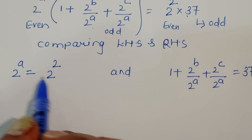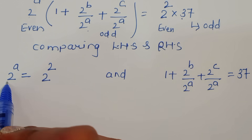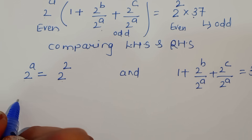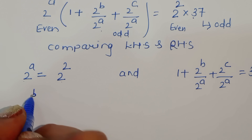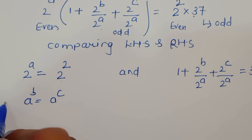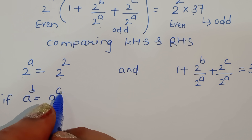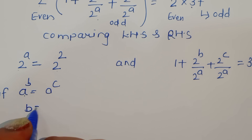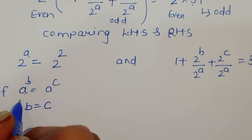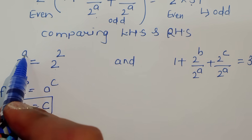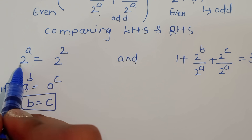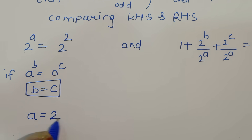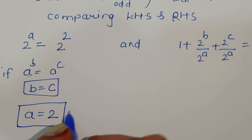Now, 2 power a is equal to 2 power 2. Using the rule: if a^b = a^c and the base is the same, then b = c. Therefore the value of a is equal to 2. We have found the value of a.